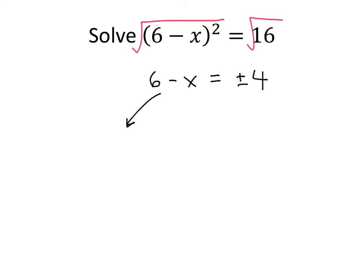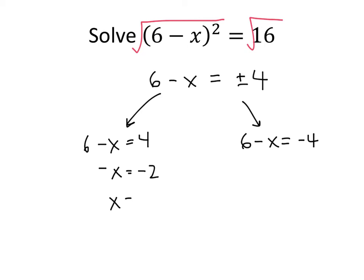So again, we have two possibilities: 6 minus x equals positive 4, and 6 minus x equals negative 4. For the first case, we subtract 6 from both sides and multiply by negative 1, giving us x equals 2. For the second case, subtracting 6 from both sides gives minus x equals minus 10, so x equals 10.